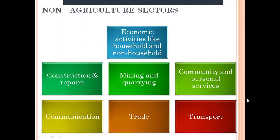Rural non-farm activities play a very important role in providing supplementary employment to small and marginal farm households. Farmers do farming only for two to three months — they prepare their fields, sow the seeds, and then wait for the crop to be ready. That two-to-three-month period is almost idle for them, so they can do other work during that time. It is an alternate or supplementary source of employment for small and marginal farmers who have very little income.